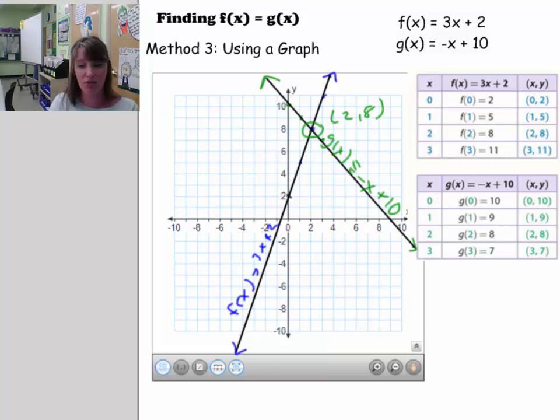The intersection of this line means it's a point on both of the lines. A point on both the lines means that it is a solution to both equations. And that is the end of the lesson for today. Thank you.